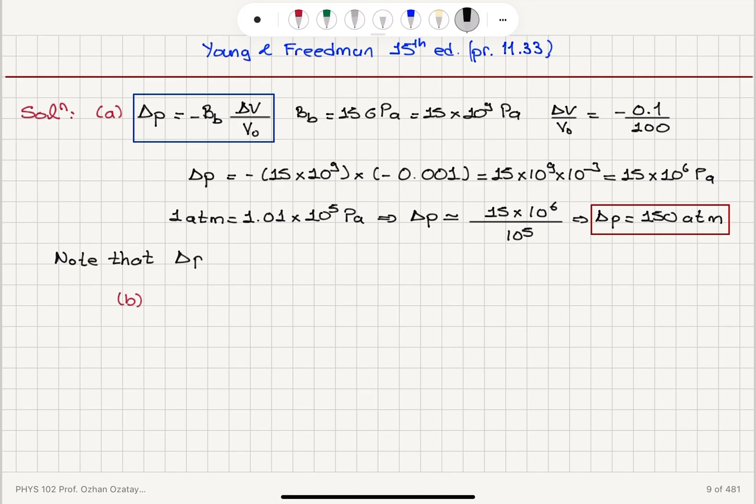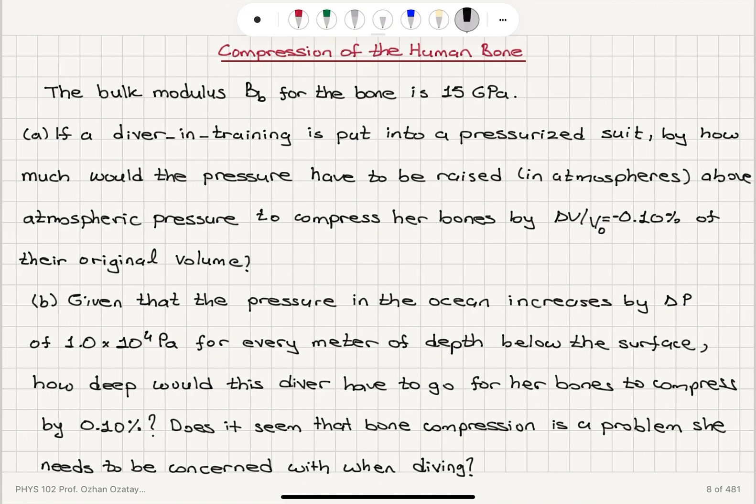Let's look at part B. Given that the pressure in the ocean increases by delta P of 1.0 times 10 to 4 Pa for every meter of depth below the surface, how deep would this diver have to go for her bones to compress by 0.1%? Does it seem that bone compression is a problem she needs to be concerned with when diving?